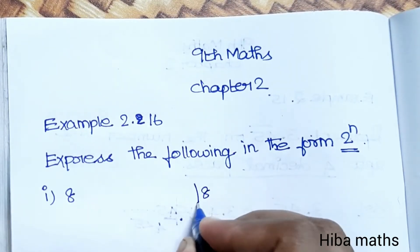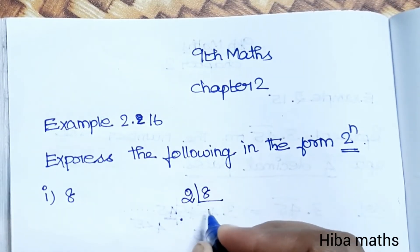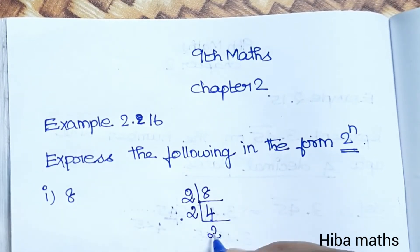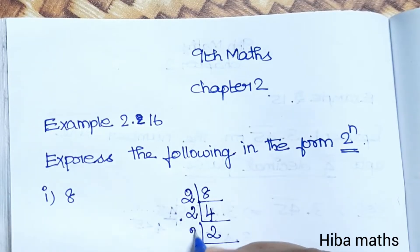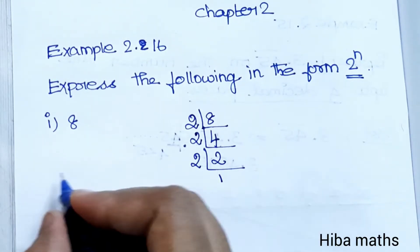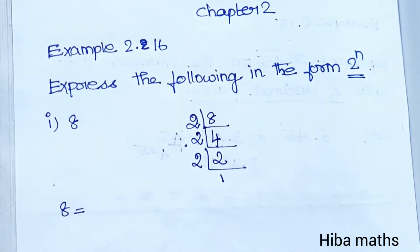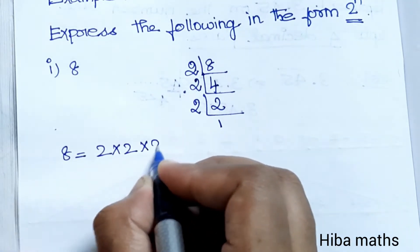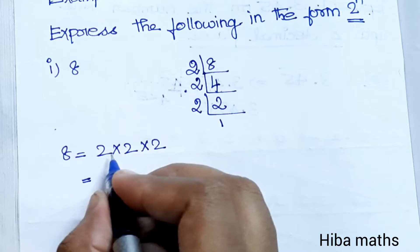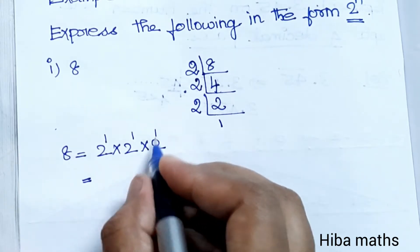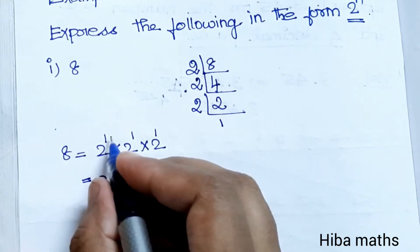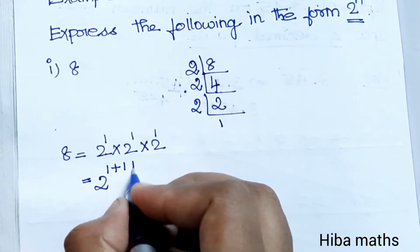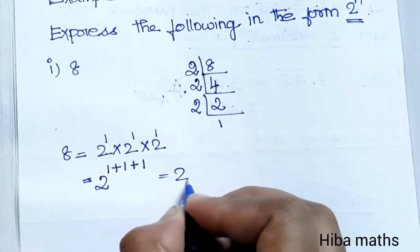8 divided by 2: 2 times 4 is 8, 2 times 2 is 4, 2 times 1 is 2. So we get three 2s multiplied: 2 × 2 × 2. That equals 2 to the power 1 plus 1 plus 1, which is 2^3.